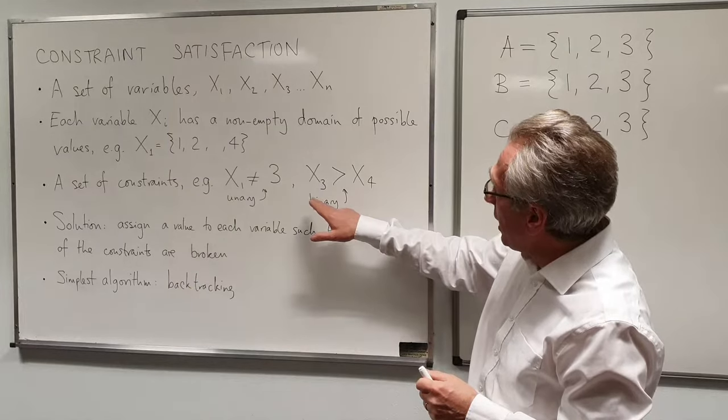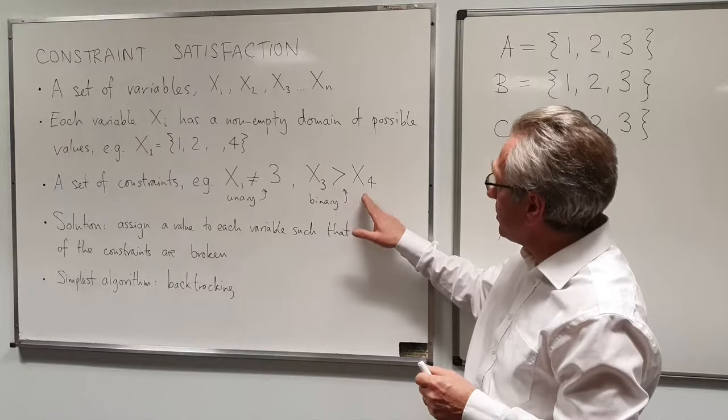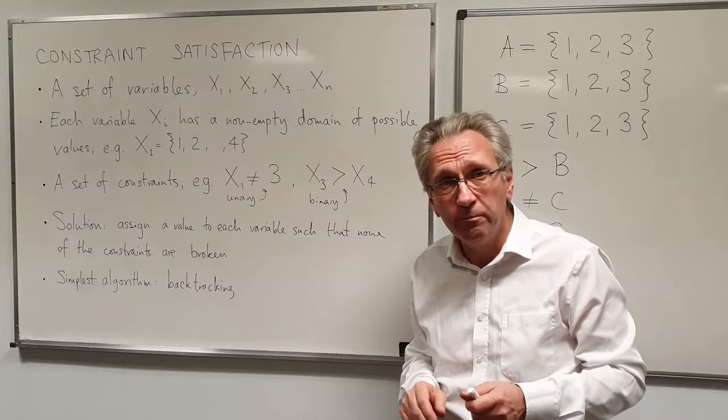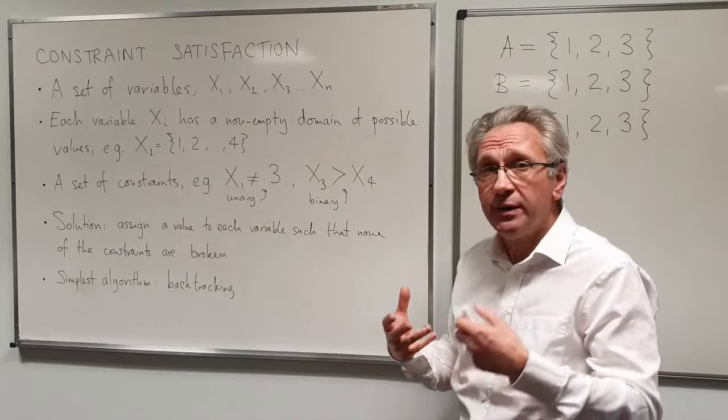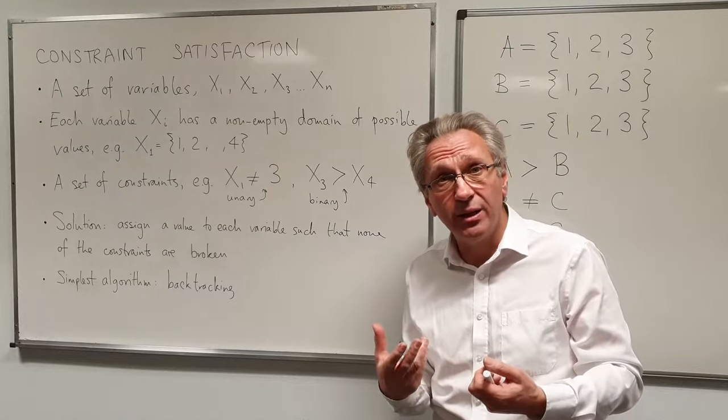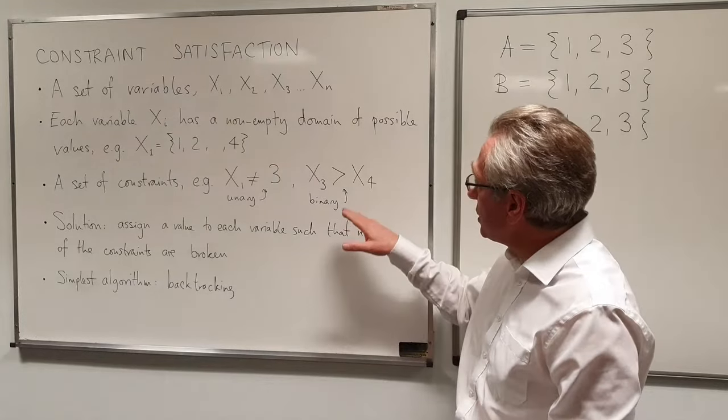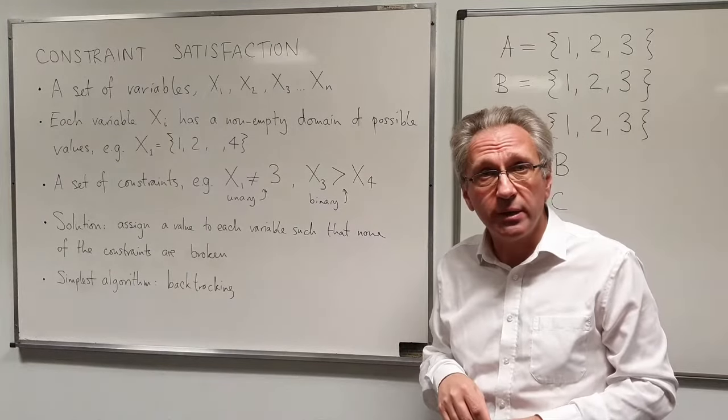But we also have binary constraints. Those involve two variables. For example, here we have x3 must be greater than x4. And what we have to do with the problem is that we have to find a consistent set of values for all of our variables so that none of these constraints are broken.